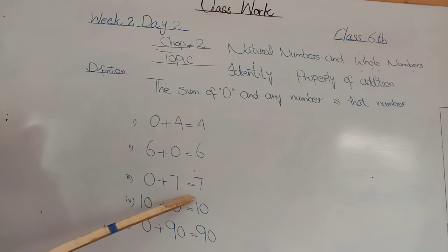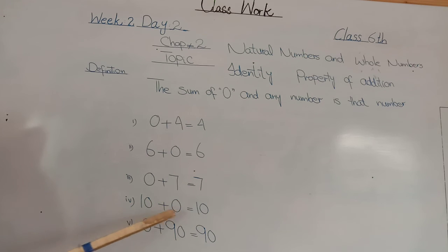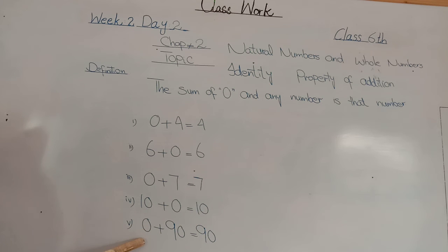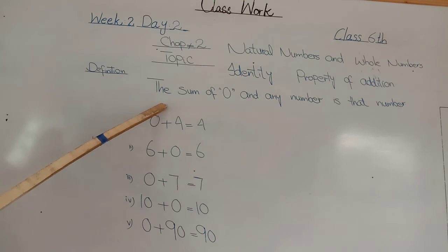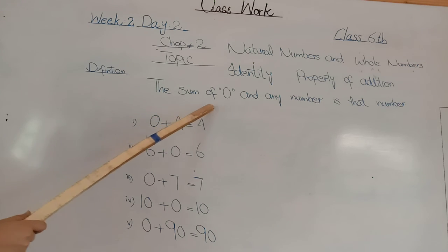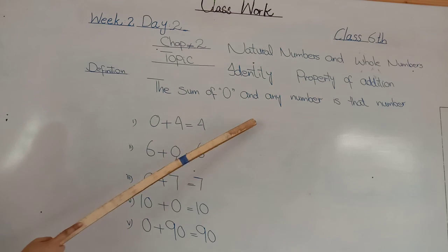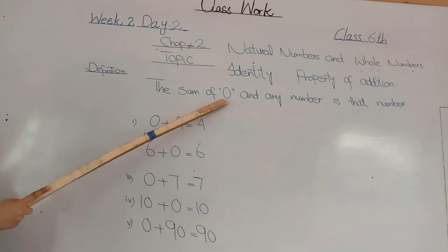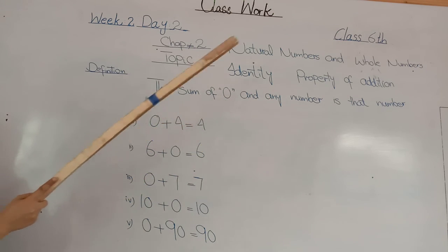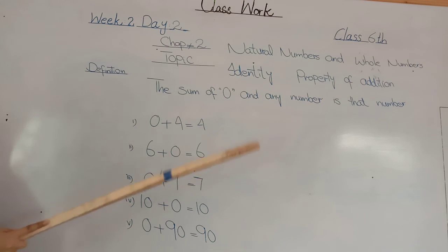0 plus 7 is equal to again 7. And if we add 10 plus 0, the answer will be 10. Or if you add 0 to 90, the number will be again 90. Coming back to your concept: the sum of 0 and any number is that number. Kisi bhi number aur 0 ka sum, woh actually wahi number hota hai jis mein hamne 0 ko add kia hota hai.